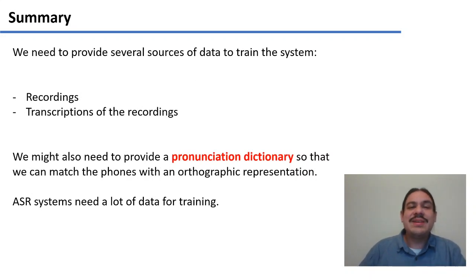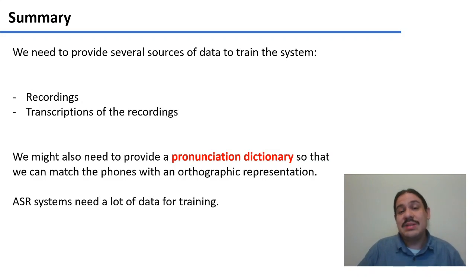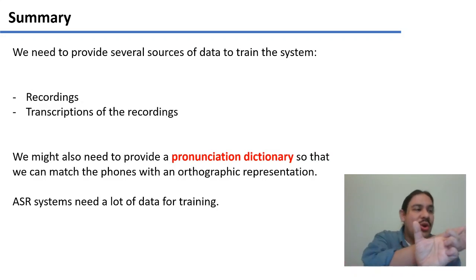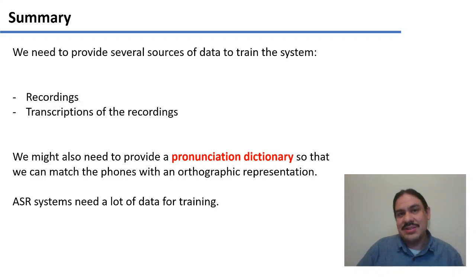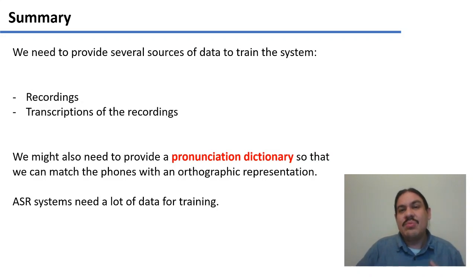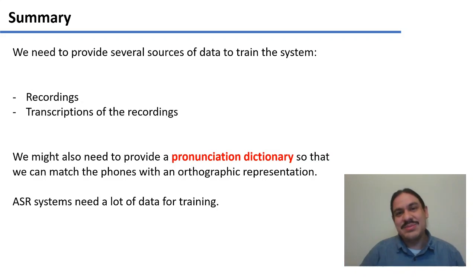In summary, we need at least two sources of data: the recordings and the transcriptions. Depending on the language, we'll also probably need a pronunciation dictionary to match the phones from the audio signal with orthographic representations. The system needs a lot of data — millions of transcribed sentences and hours and hours of audio. The absolute minimum people have managed to work with is four to five hours for traditional systems; with 10 hours you begin to get passable results, while end-to-end systems need thousands if not tens of thousands of hours.